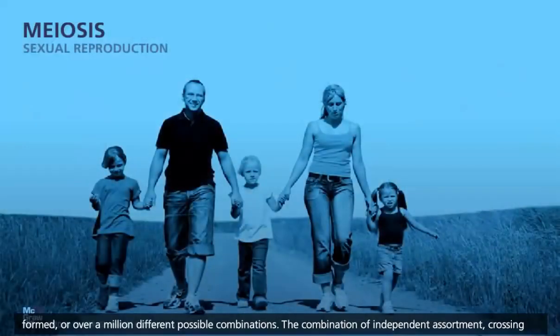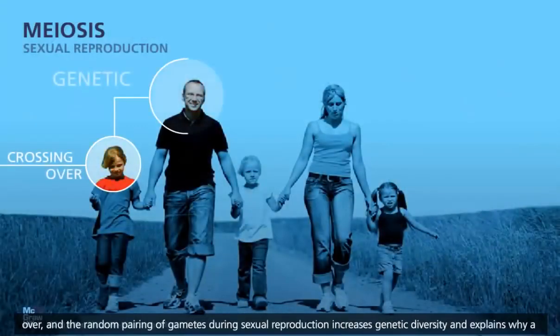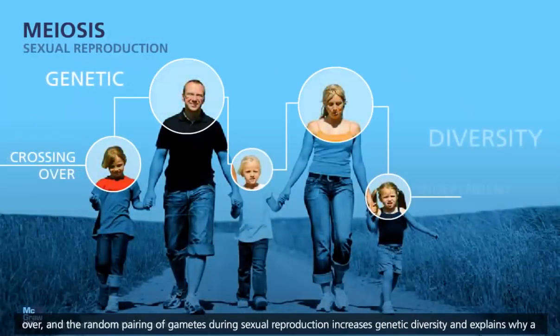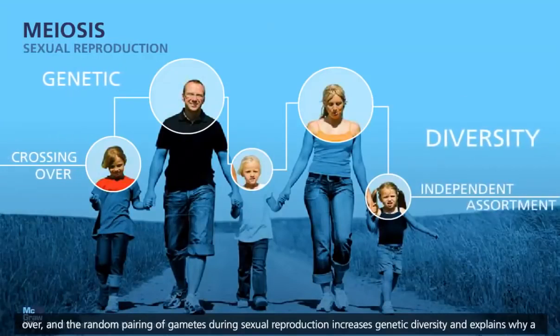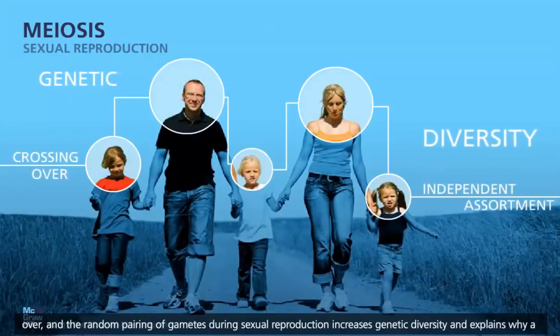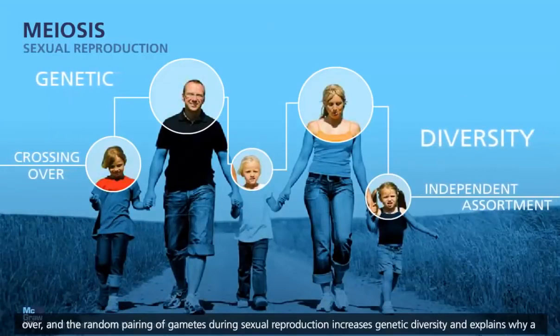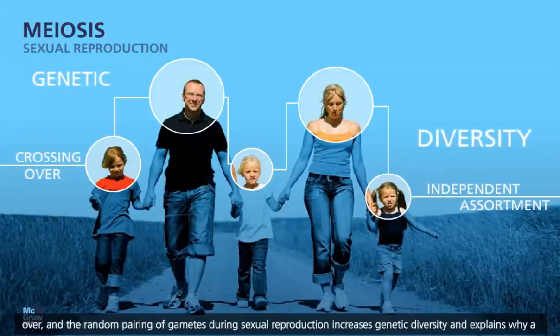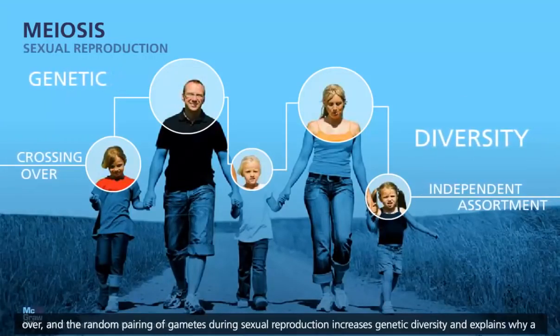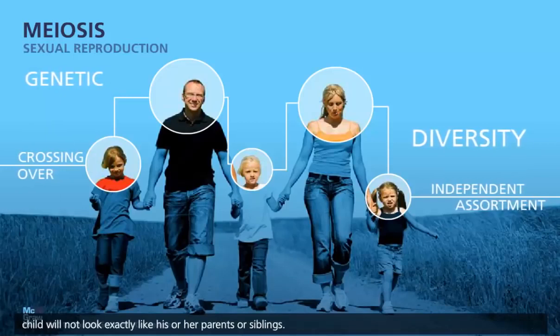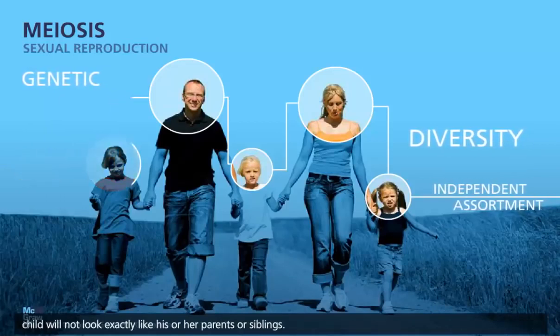The combination of independent assortment, crossing over, and the random pairing of gametes during sexual reproduction increases genetic diversity, and explains why a child will not look exactly like his or her parents or siblings.